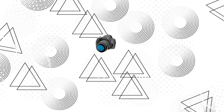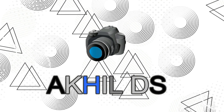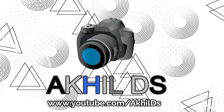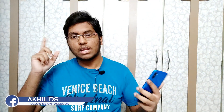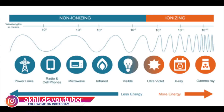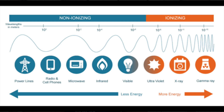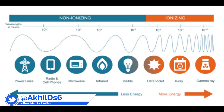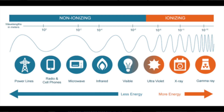If you like this video, please like and share it. First of all, we are going to talk about wave frequency. There are power lines, radio, and cell phones. There is microwave, infrared, and visible rays. We have LED waves, ultraviolet, and gamma rays.